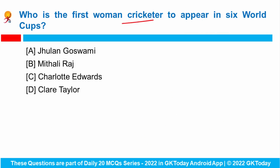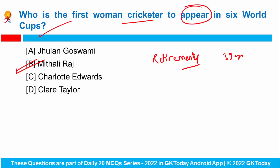Next question: Who is the first woman cricketer to appear in six World Cups? Woman cricketer Mithali Raj has announced her retirement from all formats of cricket. She is just 39 years old and is the first and only woman cricketer in the world to have played six World Cups.